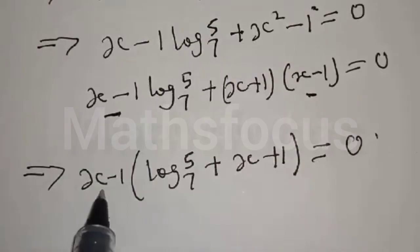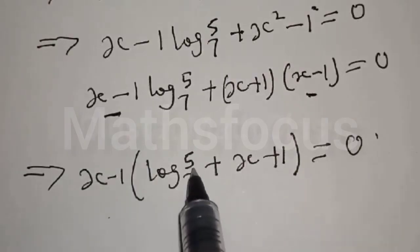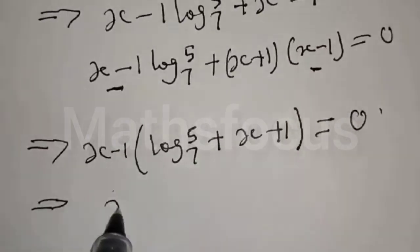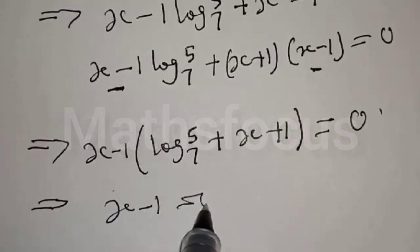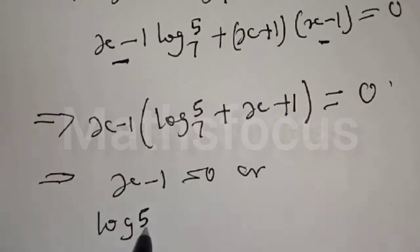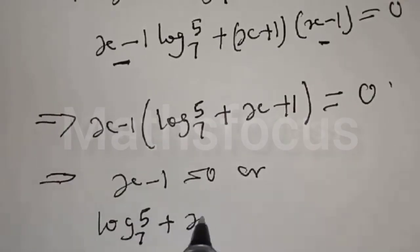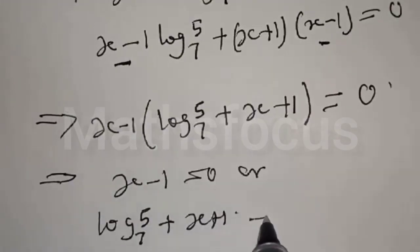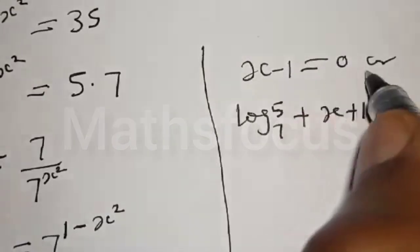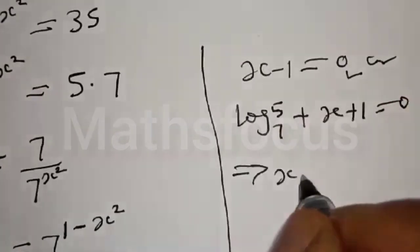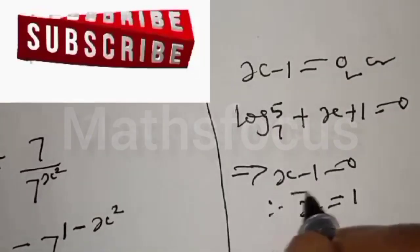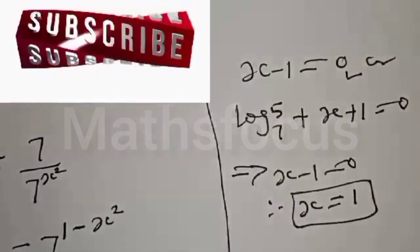From here, x minus 1 equals 0, or log base 7 of 5 plus x plus 1 equals 0. From x minus 1 equals 0, therefore x equals 1. That is one of the values of x.